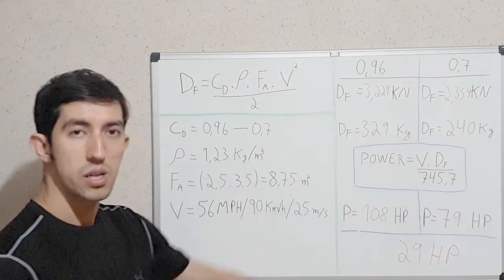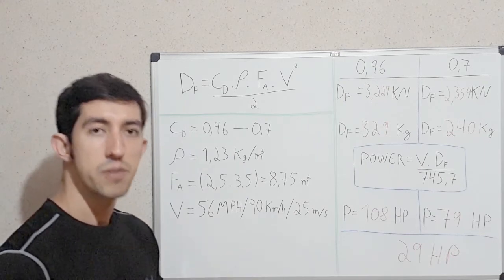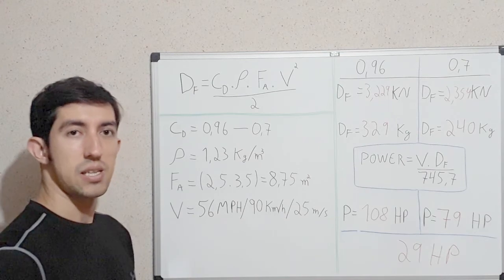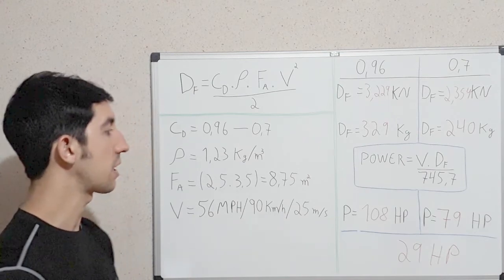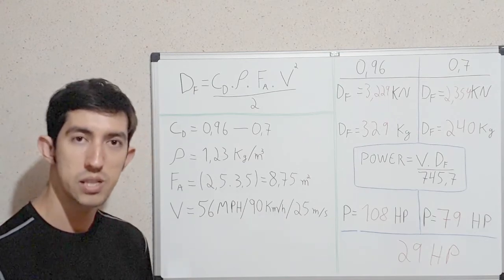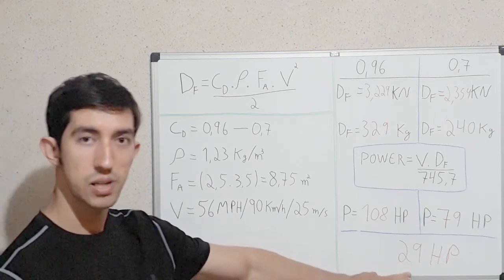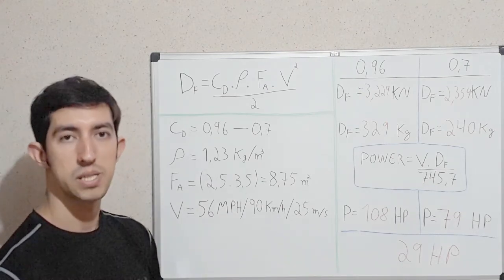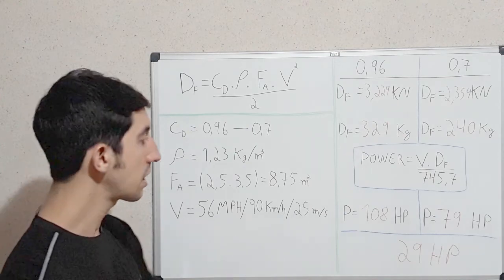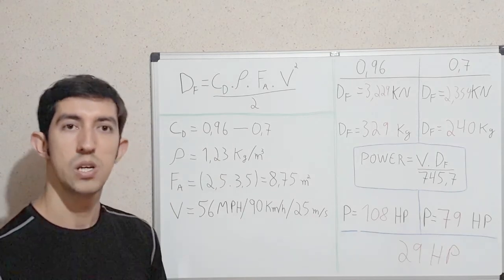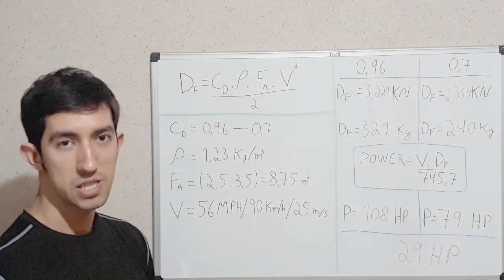29 horsepower you gain if you put the fairing. Doesn't seem too much, but in an uphill, if you try to pass someone, it's some horsepower that you get. Also, if you put the fairing, you are using less horsepower to travel at the same speed. So, you increase the fuel efficiency.